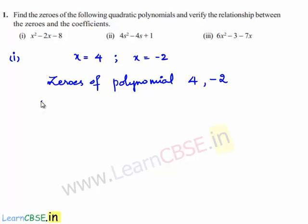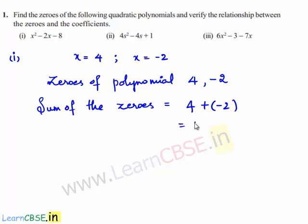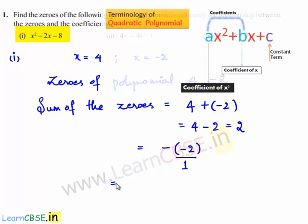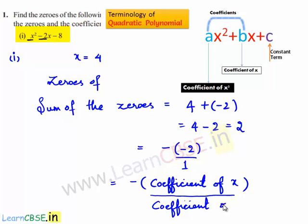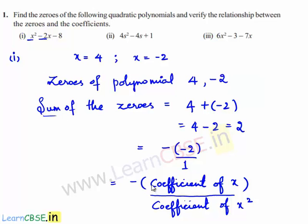The zeros of the given polynomial are 4 and -2. The sum of the zeros is 4 + (-2) = 4 - 2 = 2. This 2 can be written as -(-2)/1, where -2 is the coefficient of x and 1 is the coefficient of x². Therefore, the sum of the zeros is equal to negative of the coefficient of x divided by the coefficient of x².